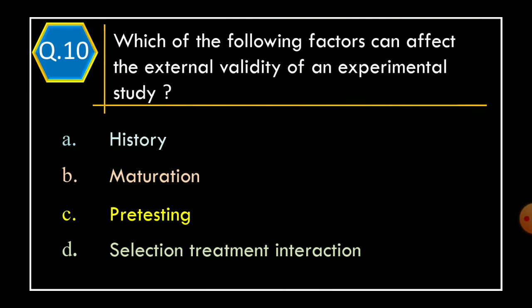Question 10: Which of the following factors can affect the external validity of an experimental study? Option A: history. Option B: maturation. Option C: pretesting. Option D: selection, treatment, interaction.